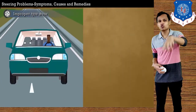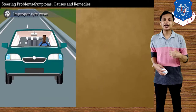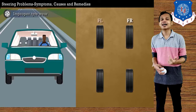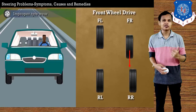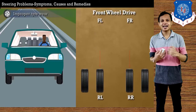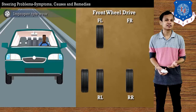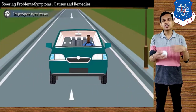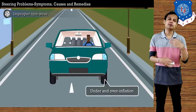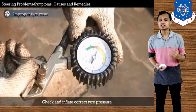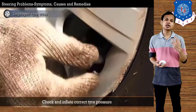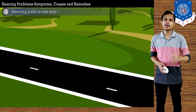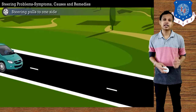Improper tire wear can happen because of harsh driving, or because of heavy weight on one side, or if the wheel alignment angles are not proper. In a front-wheel-drive vehicle, the weight is mostly on the front side. To solve uneven wear, we rotate the tires — swapping the front tires with the rear tires periodically. By doing tire rotation, the wear on all four tires can be maintained evenly. Tire pressure can also affect vehicle performance, so we need to check tire pressure regularly.